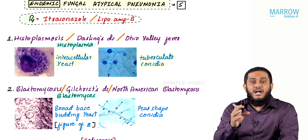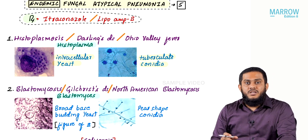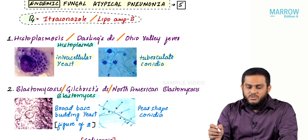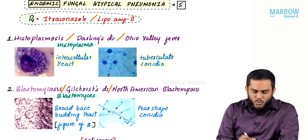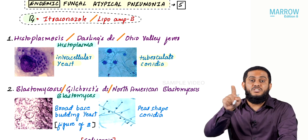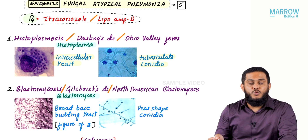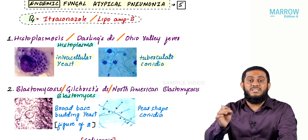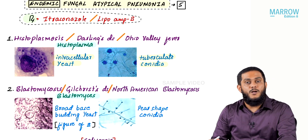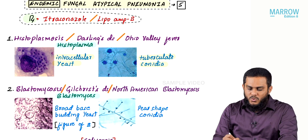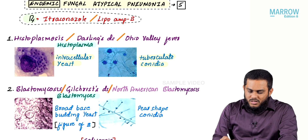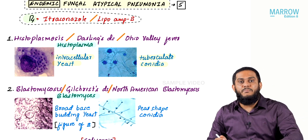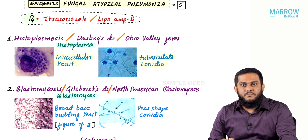Blastomyces causes pneumonia known as blastomycosis, also called Gilchrist disease — named after the scientist Gilchrist who described it — and also known as North American blastomycosis because it is most commonly seen in North America.